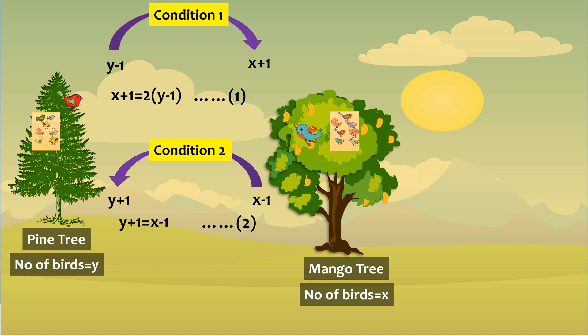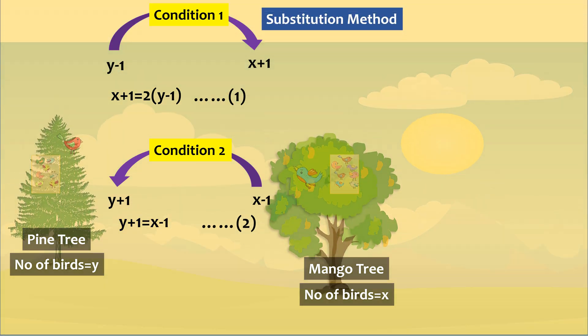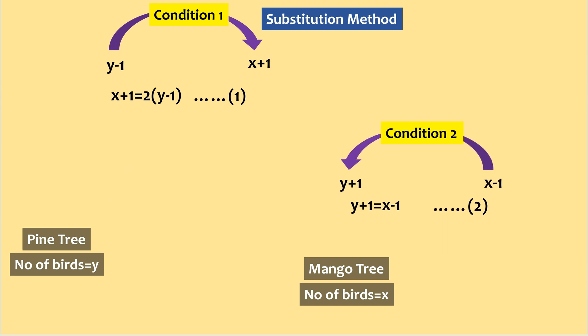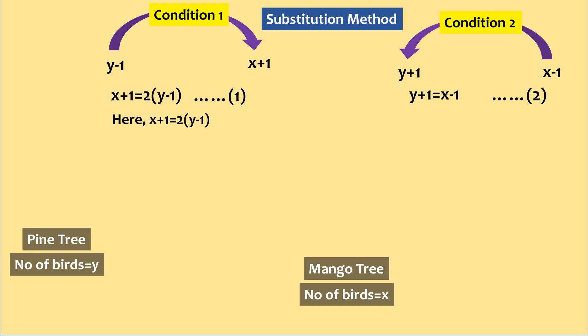Now we solve them and get the answer. So how do we solve them? Let's use substitution method. In this method, we basically substitute the value of variable from one equation to another. So let's manipulate the variable x in equation 1. Here x plus 1 equals to 2y minus 1, or x plus 1 equals to 2y minus 2, or x equals to 2y minus 2 minus 1, or x equals to 2y minus 3.